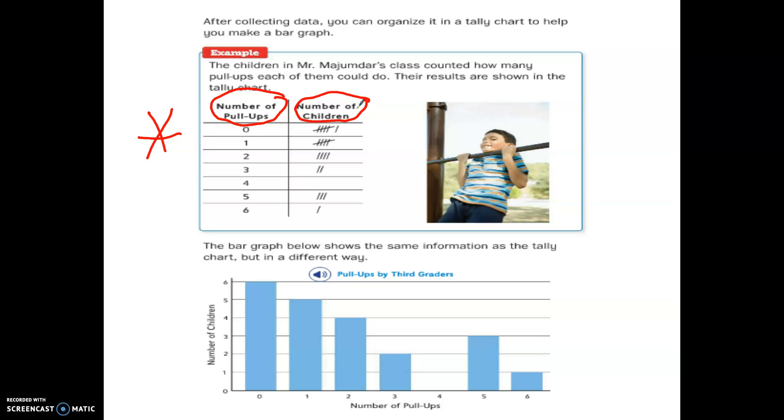So how many children did 0 pull-ups? 6 did. Now how did I know that was 6 right away? When you're making tallies and you have 5, this is 5. I don't need to count each one of those individually. When it looks like this, I just automatically can say 5 and then keep adding on. So how many children did 0 pull-ups? 5, 6. How many did 1 pull-up? 5 did. 4 children could do 2 pull-ups. 2 children could do 3 pull-ups. No children did 4 pull-ups. 3 did 5 pull-ups. And 1 super kid did 6 pull-ups. Pretty strong. He eats his Wheaties for breakfast.